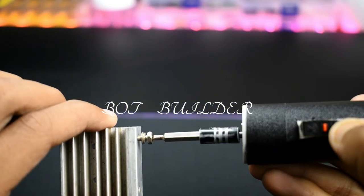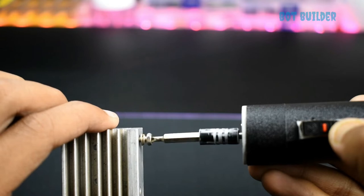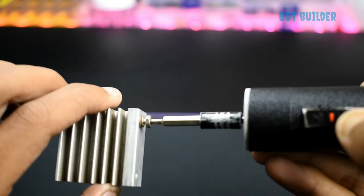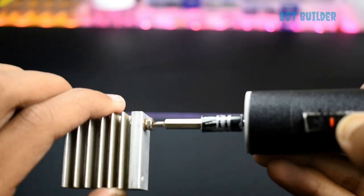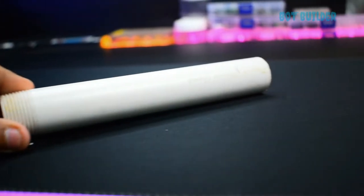Hello guys, today in this video we are making an electric screwdriver. I am using a PVC pipe to make the outer body.